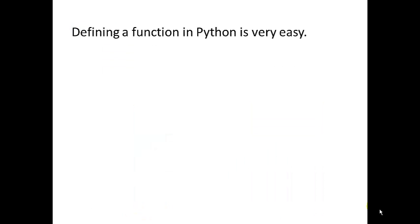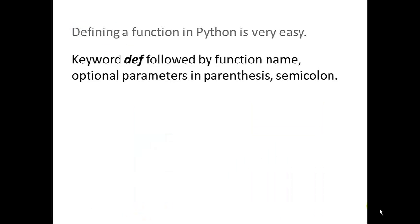Defining a function in Python is pretty simple. You use the keyword def, which is short for define, followed by the function name, optional parameters in parentheses. The parentheses are not optional, but parameters inside the parentheses are optional, and a semicolon.